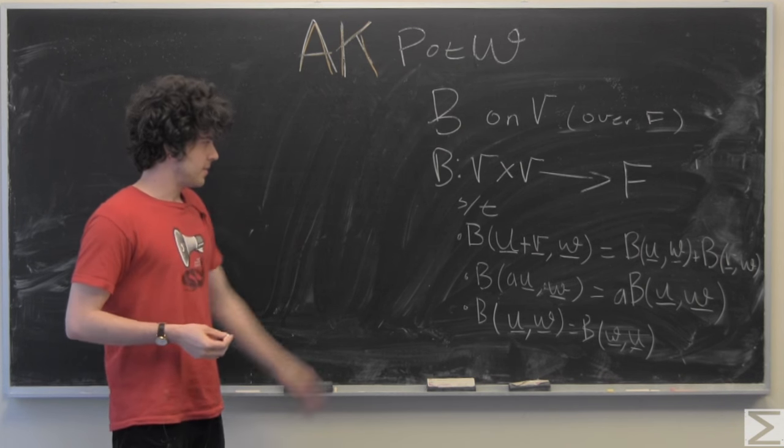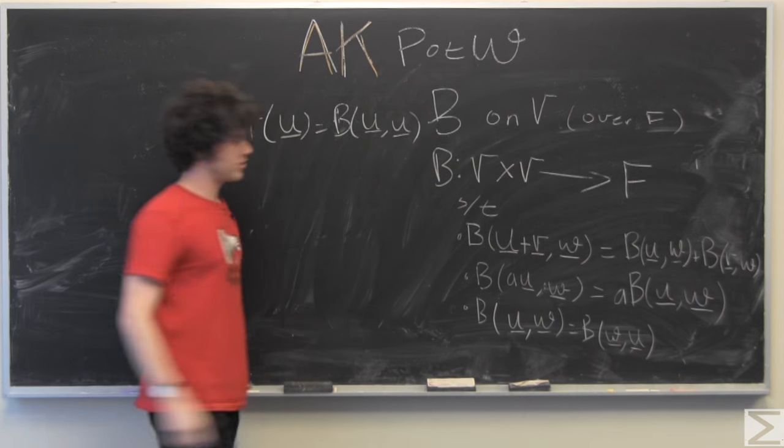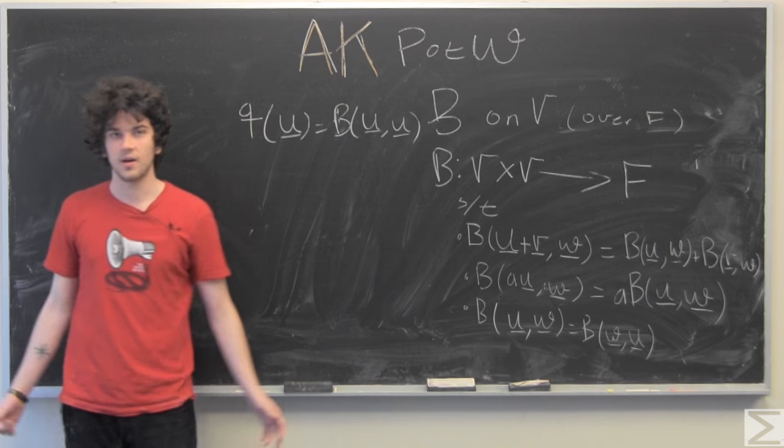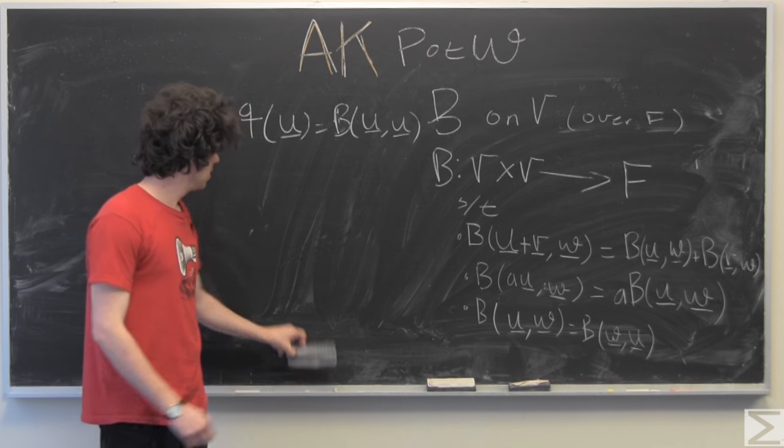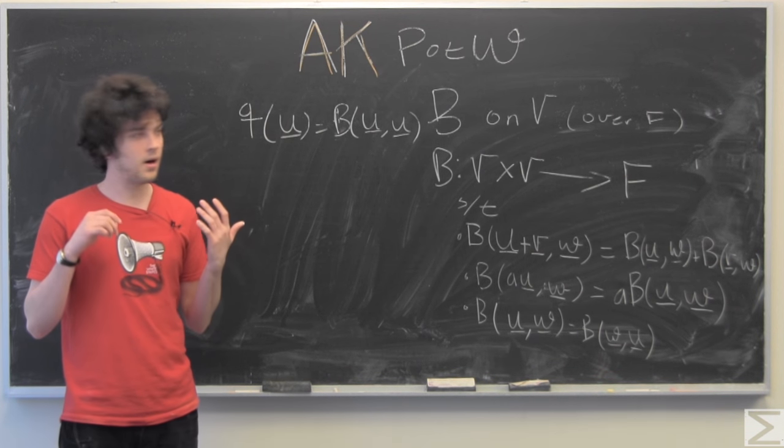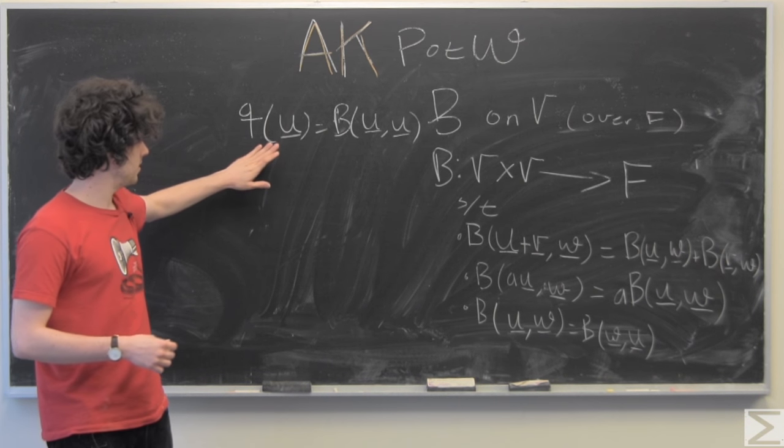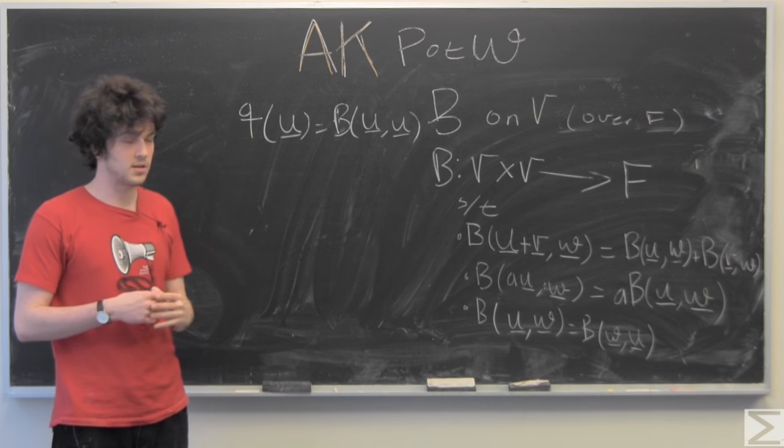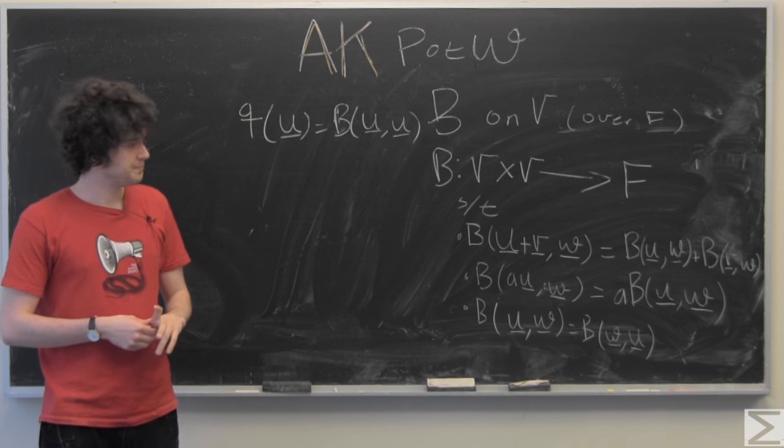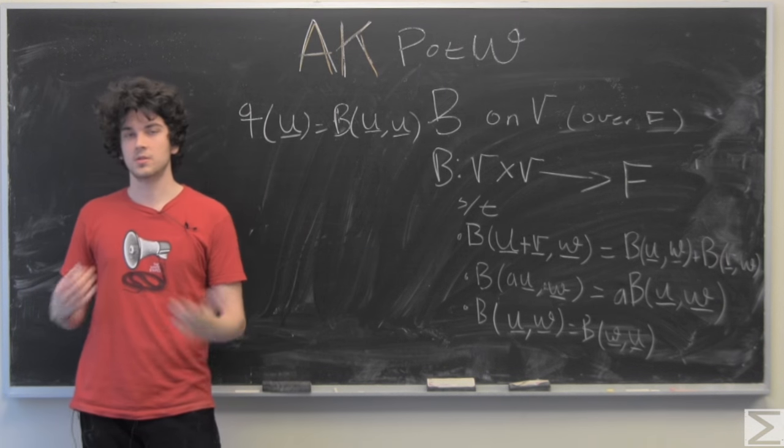So a quadratic form is simply bilinear form when you take the two of the same variables. So we're going to choose strategically a vector in V that we can manipulate to find a combination of vectors in our bilinear form. And we notice that this axiom particularly has to do with addition.